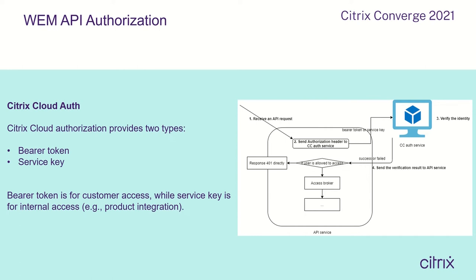How will WAM API do authorization? Cisco cloud authorization provides two types: bearer token and service key. Bearer token is for customer-accessible APIs, while service key is for internal access such as product integration. When the API service receives an API request, it sends an authorization request to Cisco Cloud authorization service based on the bearer token or service key. The Cisco Cloud authorization service verifies the identity and sends back a verification result to the API service. The API service then makes a decision to either allow or deny access.